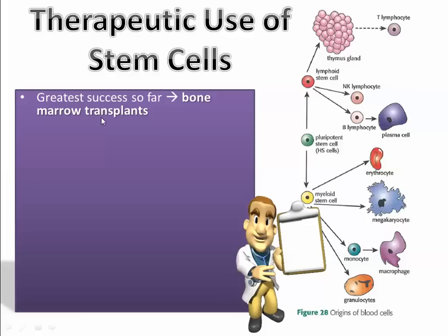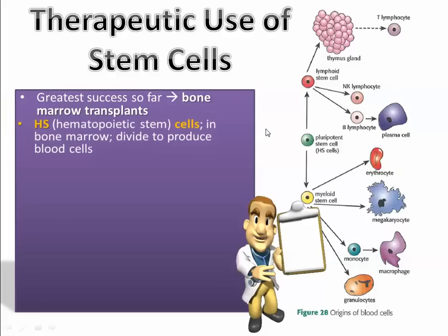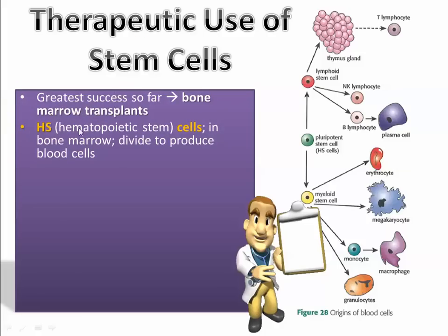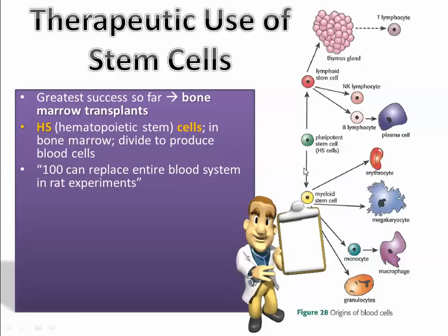The greatest success so far in the use of stem cells is in bone marrow transplants — putting new bone marrow stem cells, which produce blood cells, into somebody's system for treatment of disease. These are called hematopoietic stem cells, or HS cells, found in the bone marrow. They are a type of adult stem cell — they can't turn into nerve cells or pancreatic cells, but they can turn into many different types of blood cells.